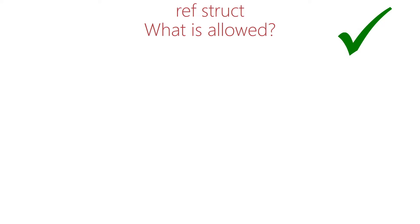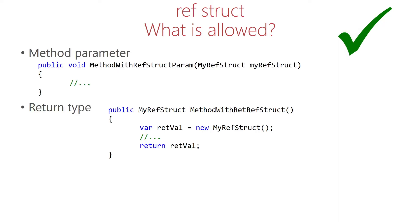So we can do basically three things with a ref struct: it can be a method parameter, the return type of a method, and it can be a local variable. All those kind of make sense since in those cases the ref struct is allocated on the stack.